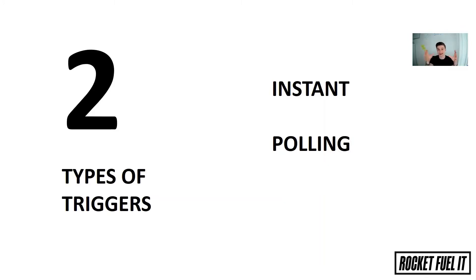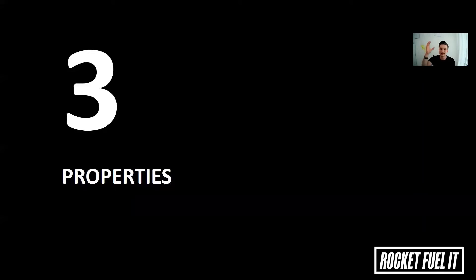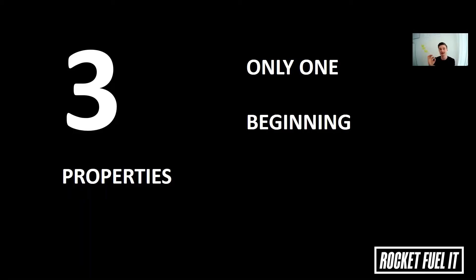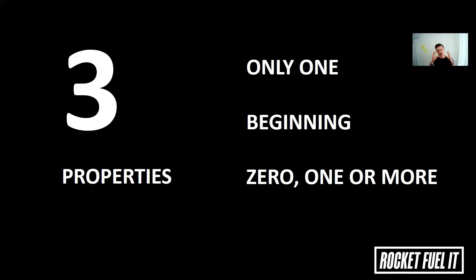That's the key difference between the two types of triggers. In general, all triggers share three properties. First, there can only ever be one trigger per scenario. Second, the trigger always has to be at the beginning of the scenario — it logically doesn't make sense to do something, then have the trigger, then have something else happen. Third, a trigger can always create zero, one, or more bundles that go into the scenario and get processed.